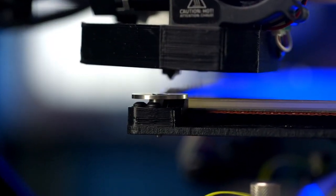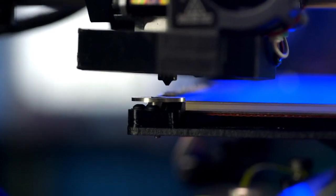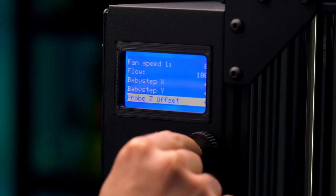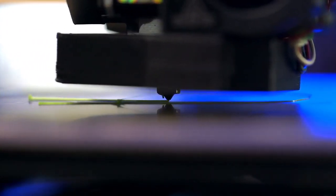The Lulzbot Taz Workhorse still has features you're familiar with, like the automatic bed leveling system to compensate for any tilt in the bed surface, and live baby stepping on the LCD so you can achieve the perfect first layer on all your 3D prints.